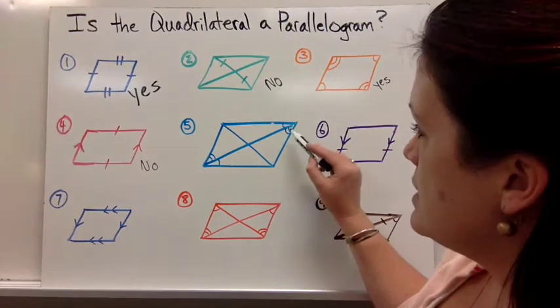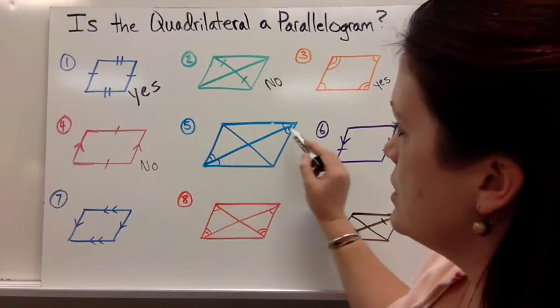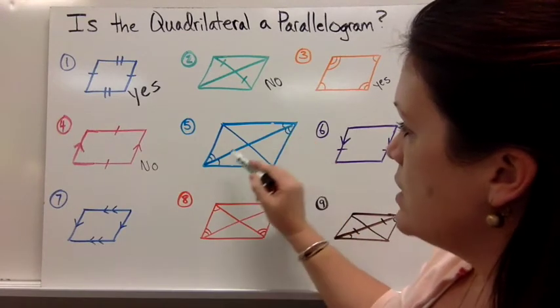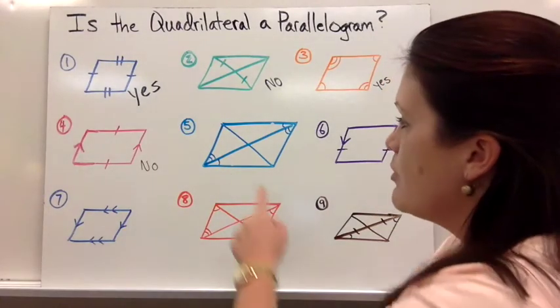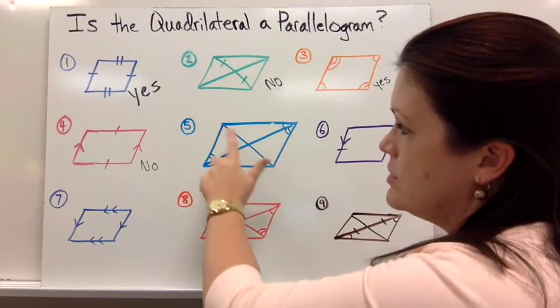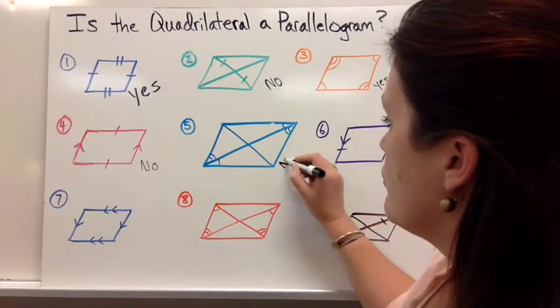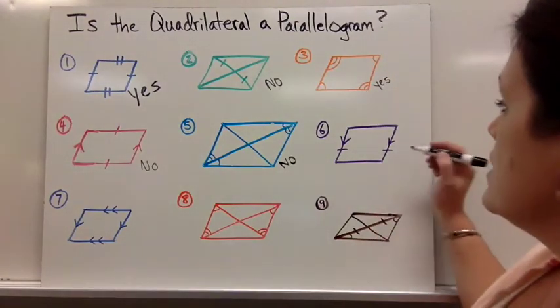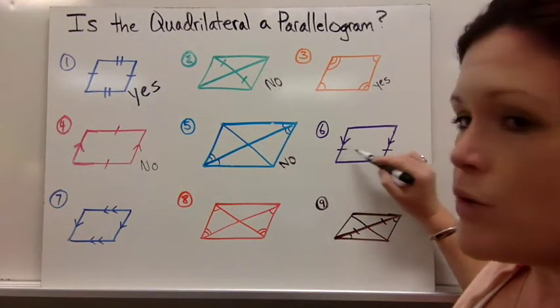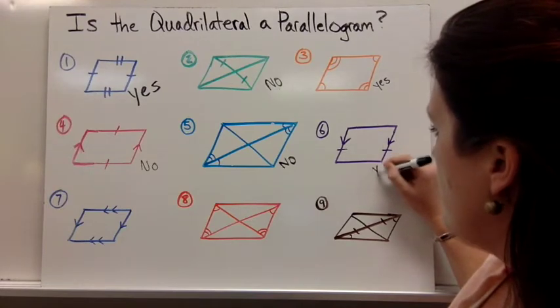For number five, they've labeled these angles as congruent. This one and that one that are alternate of each other, and then this one and that one that are alternate of each other, which is good information, but we don't know anything about these angles here. So it's still not enough information to prove that that would be a parallelogram. On number six, these marks indicate that that one side is both congruent and parallel to the other, so that would be a yes.